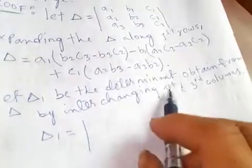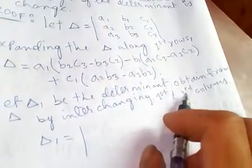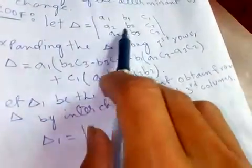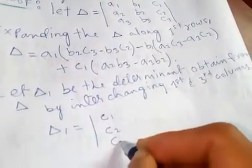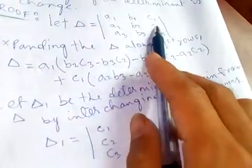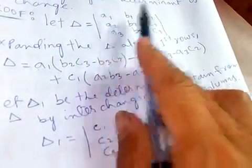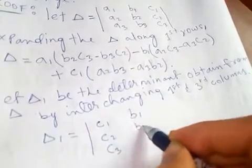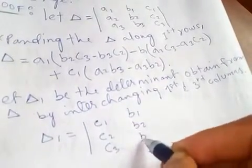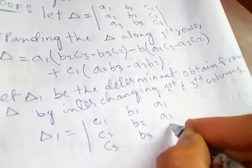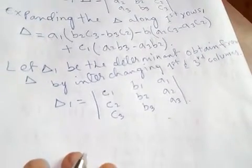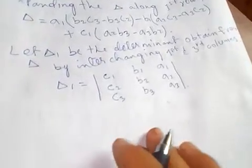Since we interchange the first column and the third column, the new first column becomes c1, c2, c3 and the new third column becomes a1, a2, a3, while the second column b1, b2, b3 remains the same. Now I'm going to expand Delta_1 along the first row.